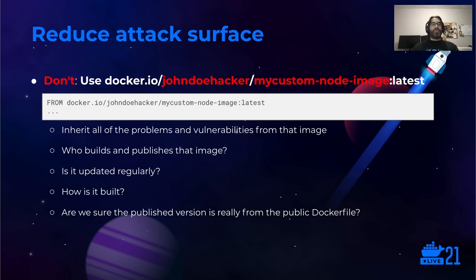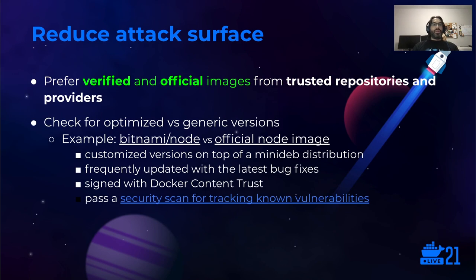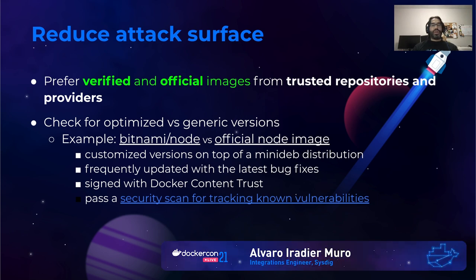Another common case: you find an image published by some unknown person on Docker Hub that fits your application requirements very nicely. Why shouldn't you just use it as your base image? There are a plethora of reasons — you are inheriting all the problems and vulnerabilities from that image. You don't know who builds and publishes it. Is it updated regularly? Are you sure the published version is really the one built from the public Dockerfile? Instead, prefer verified, official, trusted images with frequent releases and updates. Check if there are optimized versions better suited for production — for example, Bitnami provides images for several environments, like Node, which are customized versions built on top of a small minidistribution, frequently updated, signed, and verified with a security scan.